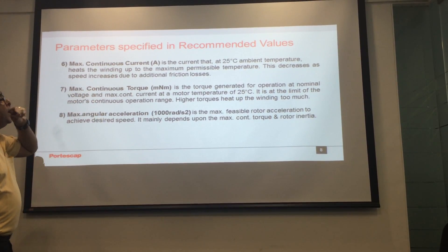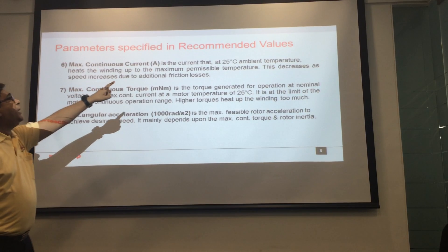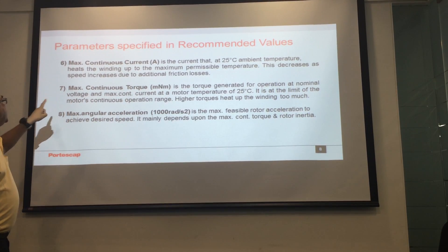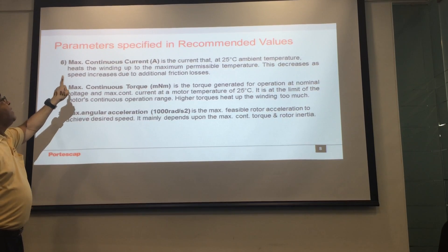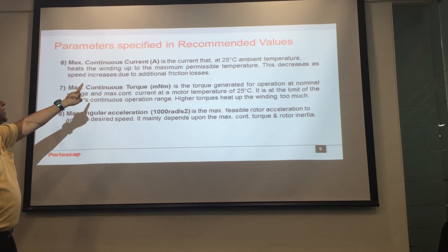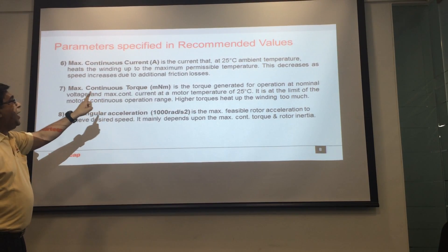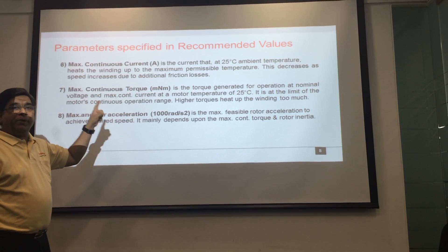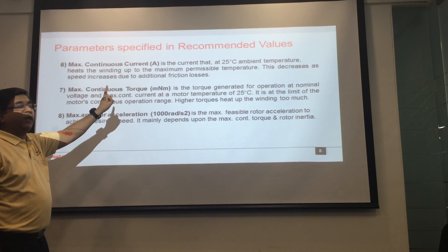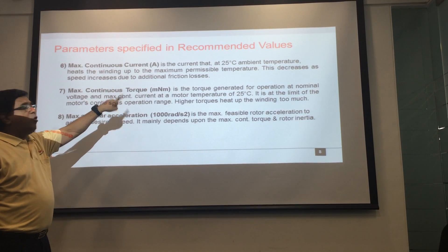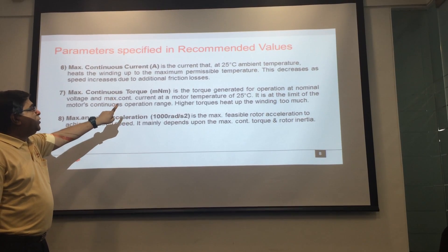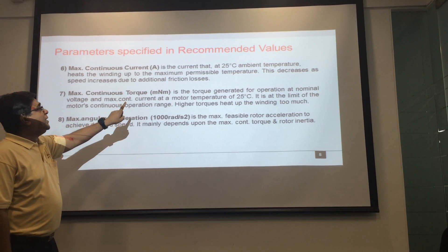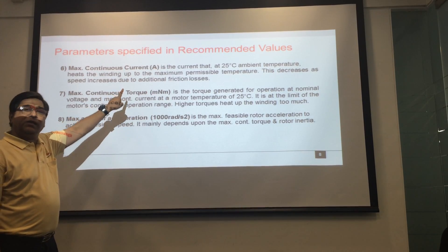Now we come to the next slide of recommended values. These are maximum conditions: maximum continuous current and maximum angular acceleration. Maximum continuous current is the current at which the motor heats up to its maximum permissible temperature — it is a threshold value and we should not go beyond it. Maximum continuous torque is the torque exerted by the motor when the maximum continuous current is passed.